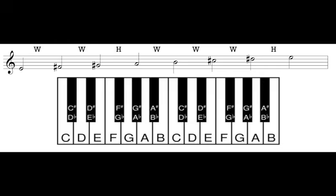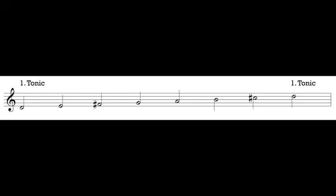This is the E major scale. The next thing we want to talk about relating to scales is scale degrees. A scale degree is the term we use to describe the order in which notes appear in the scale. The first note of the scale is called scale degree 1, the second note is scale degree 2, the third note is scale degree 3, and so on. In major and minor scales, each of these notes has a special name, and we'll want to learn these names because we'll be using them a lot when talking about music.